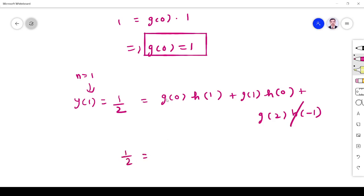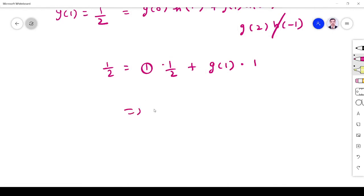1/2. g 0. We have found 1. h 1 is given in the problem, 1/2. g 1. We have to find it. 1/2. h 0 is given as 1. So if you simplify what you have made is,